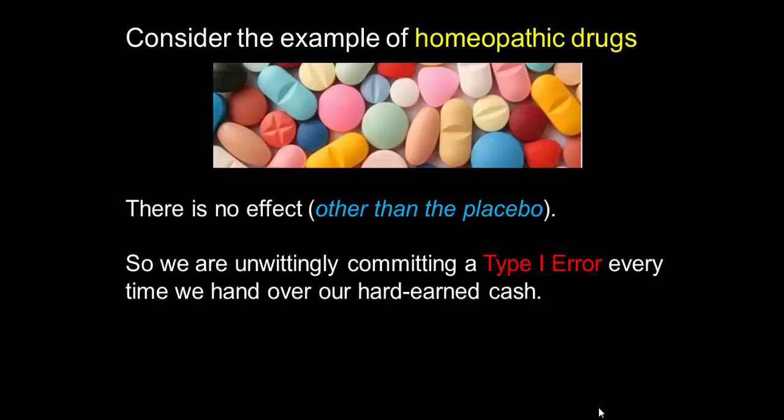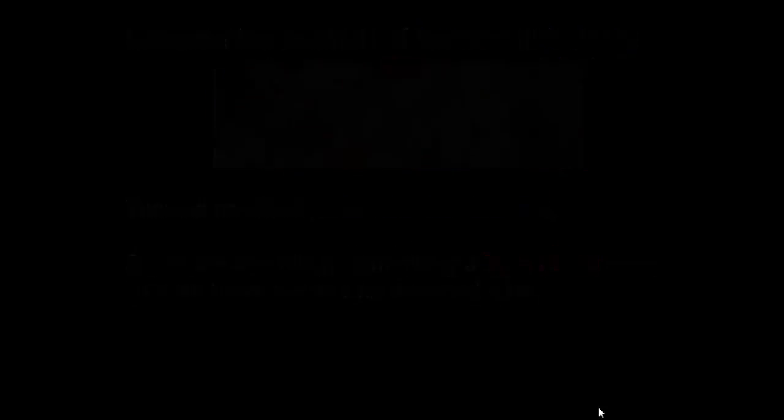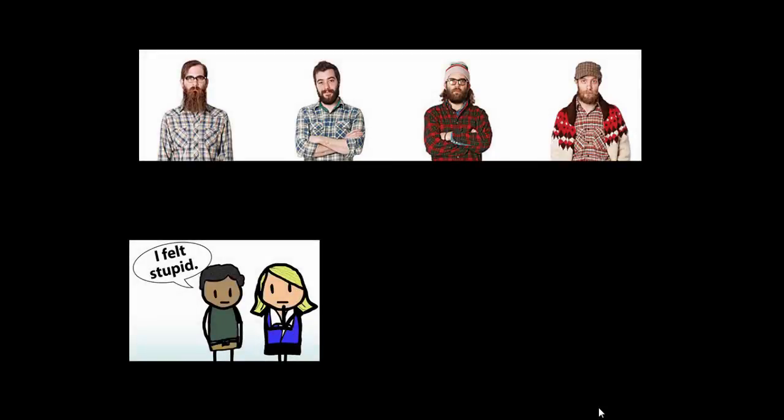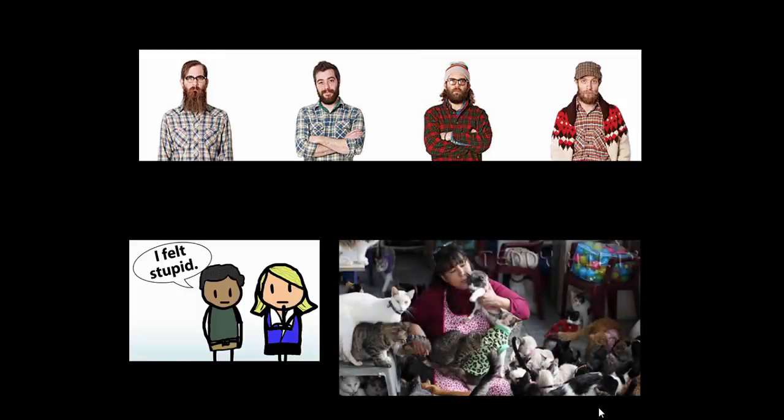So every time we hand over our hard-earned cash we are unwittingly committing a Type I error. I'll let that sink in. Homeopathic drugs are a false positive. We think they have an effect whereas in actual fact study after study have shown there is no effect. And of course I am talking consistently here about quantitative research. Of course most of you will readily accept this, however hipsters, qualitative researchers, and old ladies with cats probably won't.